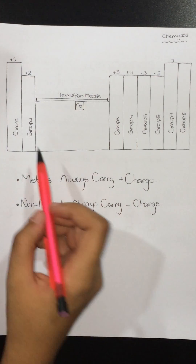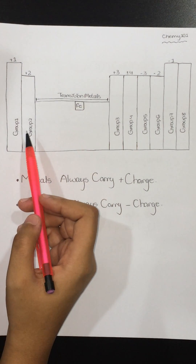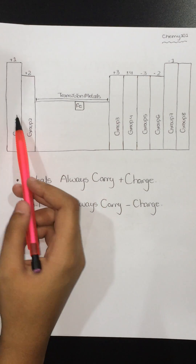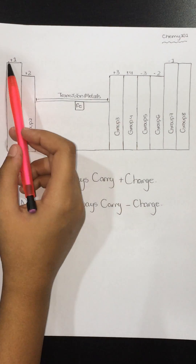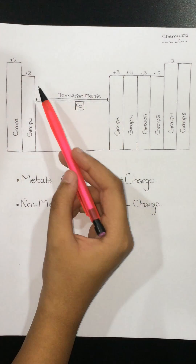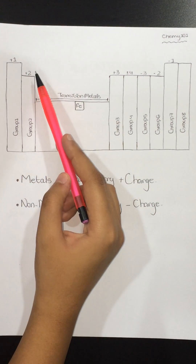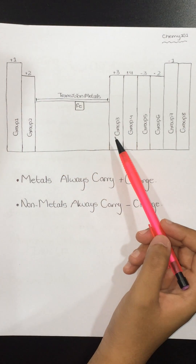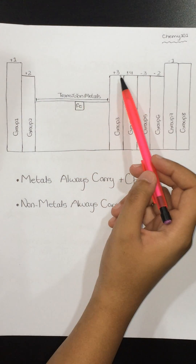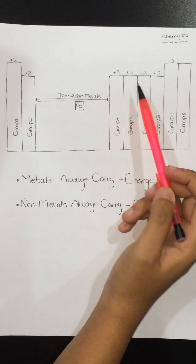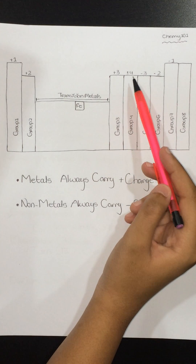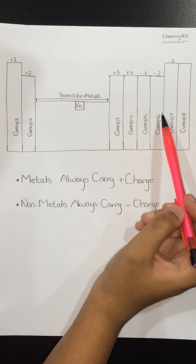The ionic charge is shown in the periodic table. Group 1 has a charge of positive 1. Group 2 has a charge of positive 2. Group 3 has a charge of positive 3. Group 4 has a charge of positive or negative 4.